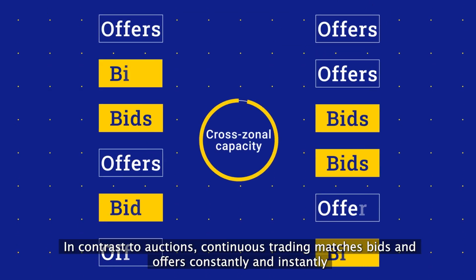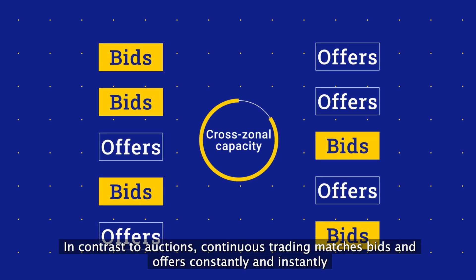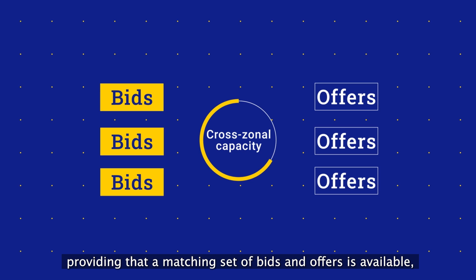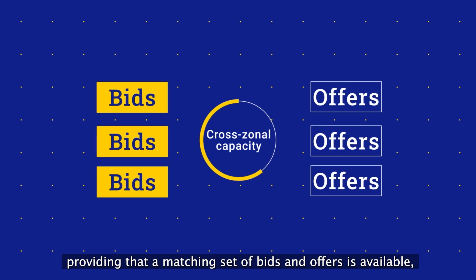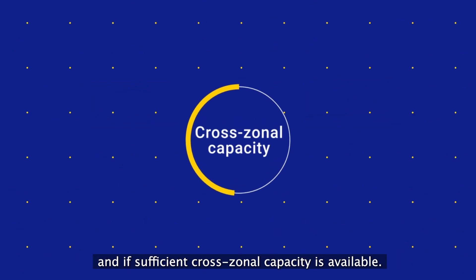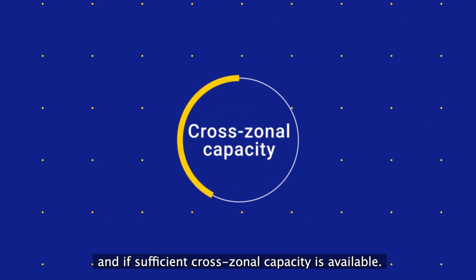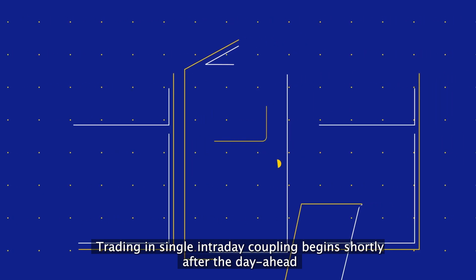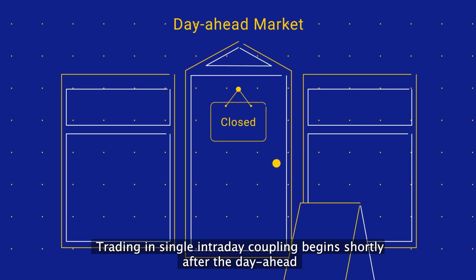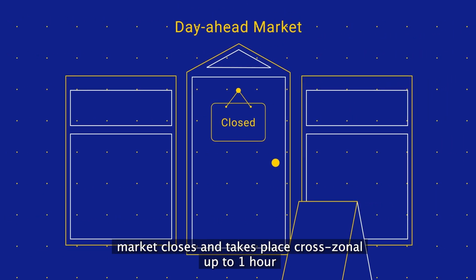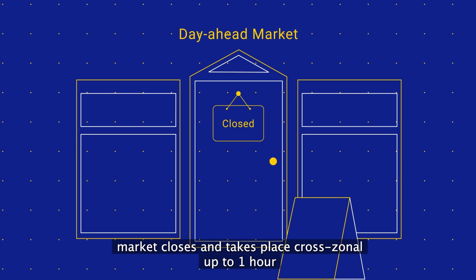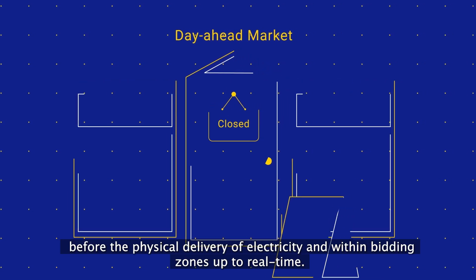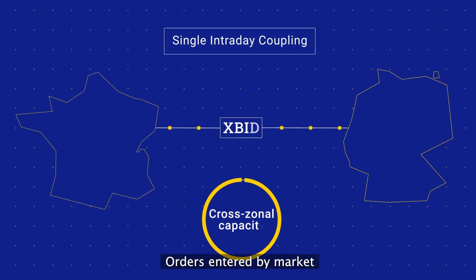In contrast to auctions, continuous trading matches bids and offers constantly and instantly, providing that a matching set of bids and offers is available and if sufficient cross-zonal capacity is available. Trading in single intraday coupling begins shortly after the day-ahead market closes and takes place cross-zonal up to one hour before the physical delivery of electricity and within bidding zones up to real-time.